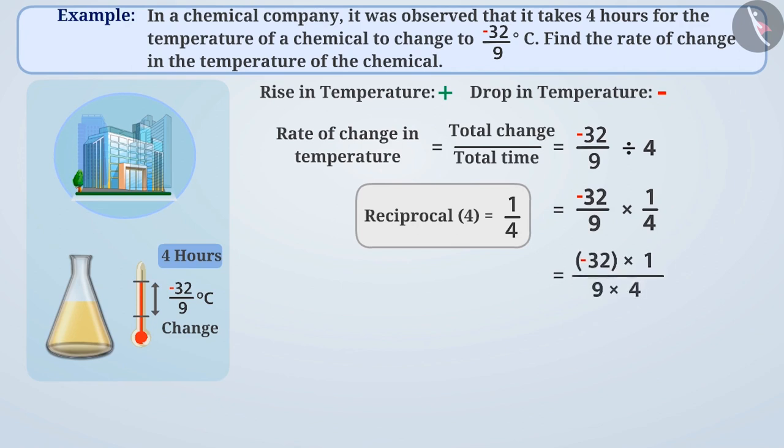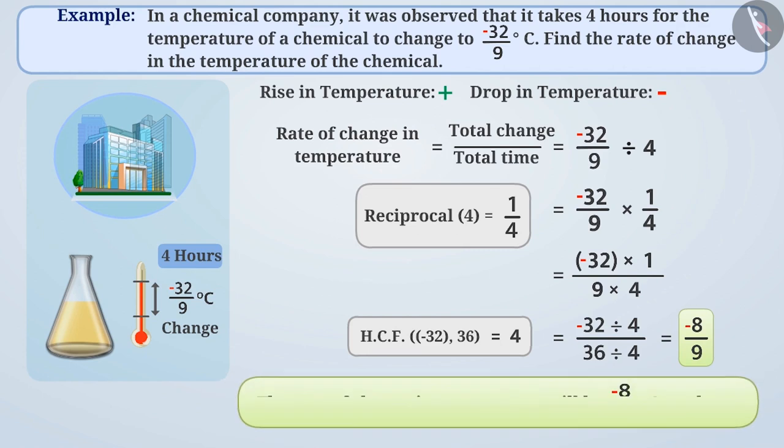Thus, the result will be minus 32 by 36. Here, the HCF of the numerator and the denominator is 4. So, we will divide both the numerator and denominator by 4. This will allow us to express the result as minus 8 by 9 in standard form. So, we can say that the rate of temperature change in the chemical will be minus 8 by 9 degrees centigrade per hour.